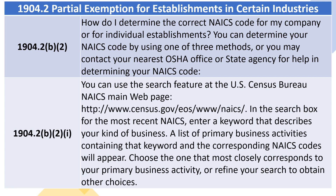In the search box for the most recent NAICS, enter a keyword that describes your kind of business. A list of primary business activities containing that keyword and the corresponding NAICS codes will appear.